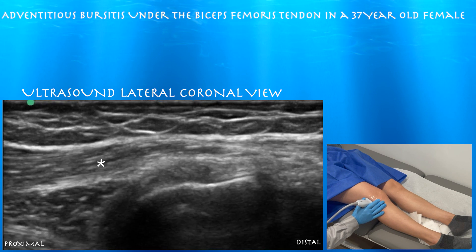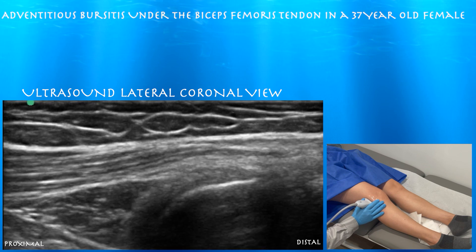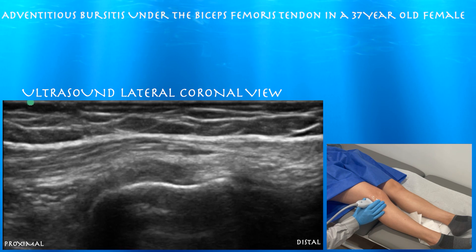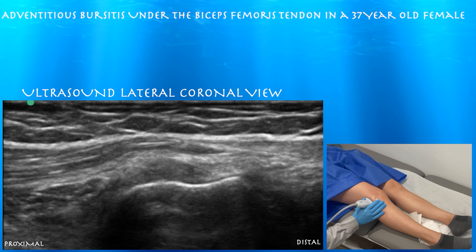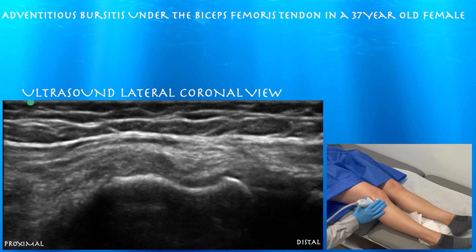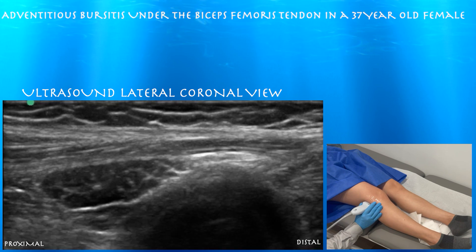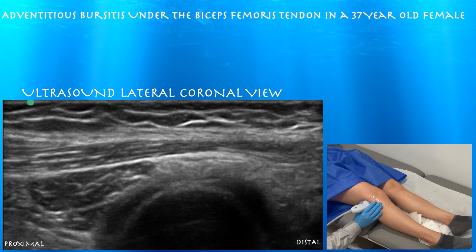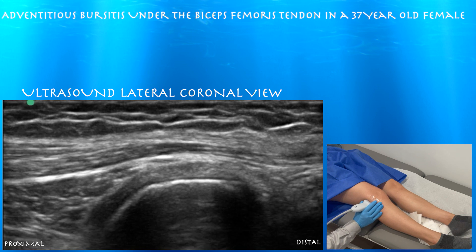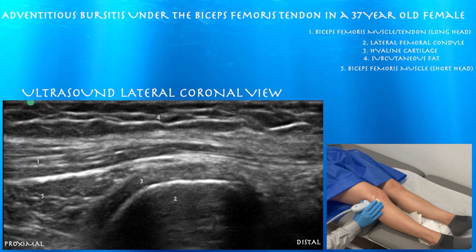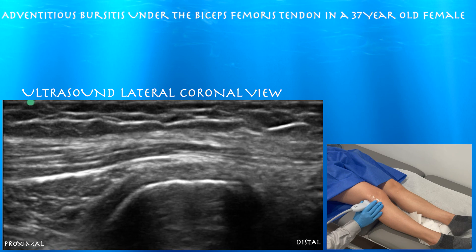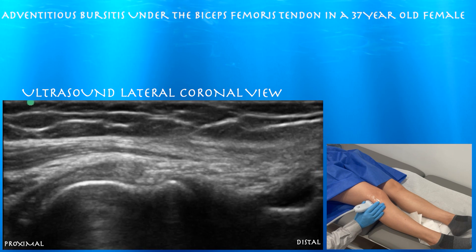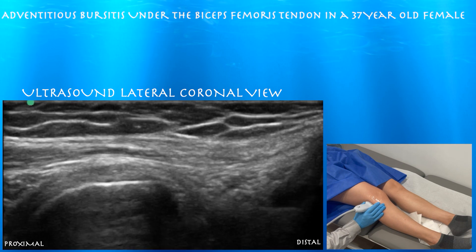Here again you can appreciate the long and short head of the biceps femoris musculature blending into a tendon. We can also appreciate some of the hyaline cartilage over the lateral femoral condyle posteriorly — looks like a pretty healthy layer of cartilage. You can also appreciate the layering of the muscles and the short head of the biceps femoris, which is deep and broad and feeds into the biceps femoris tendon along with the long head.